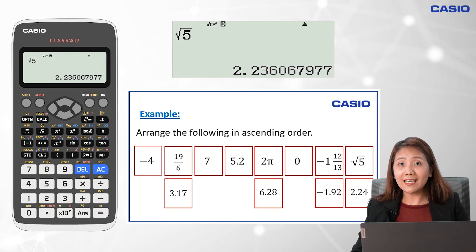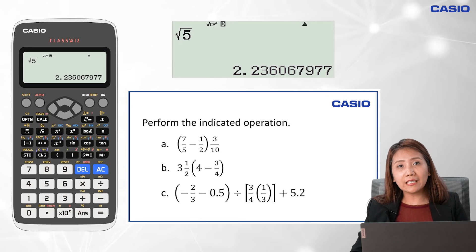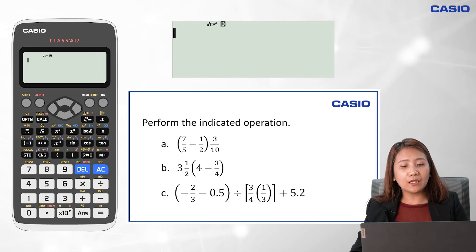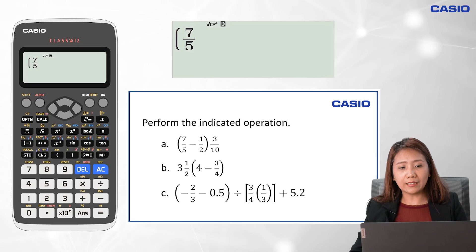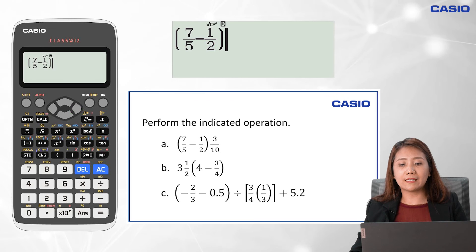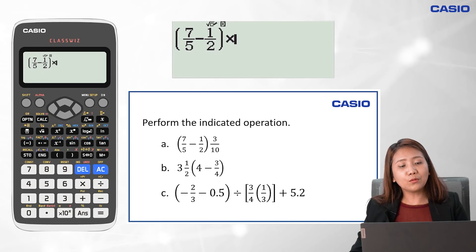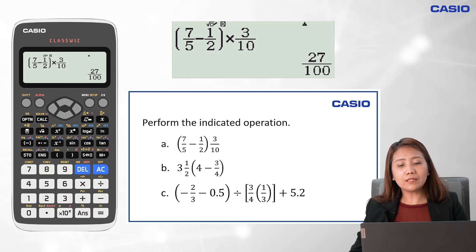That's how we arrange the given in ascending order. Let us now perform the indicated operation. We key in open parenthesis, followed by the fraction key, with 7 in the numerator, arrow down, 5 in the denominator, and arrow right. We key in minus sign, then 1 over 2, arrow right, and close parenthesis. Then we multiply that quantity with 3 over 10, keying in 3, fraction key, and 10. We click on equal sign, and the value is 27 over 100.